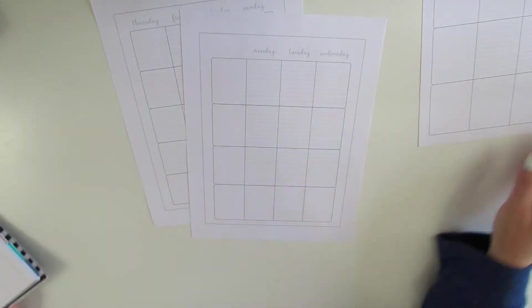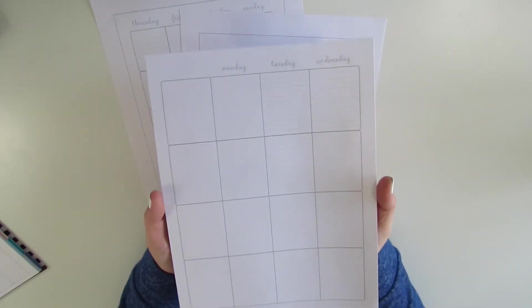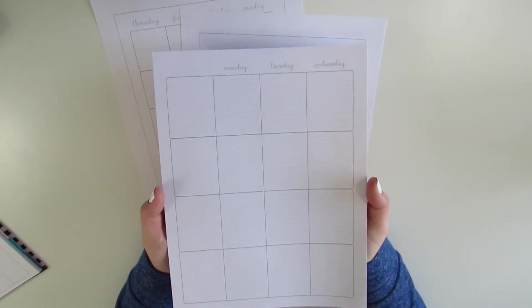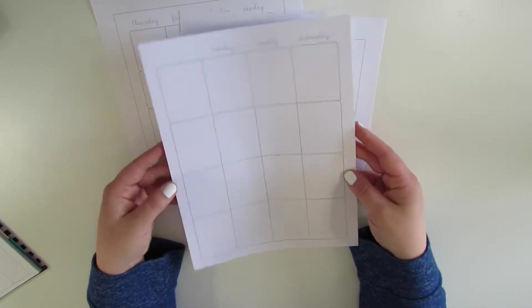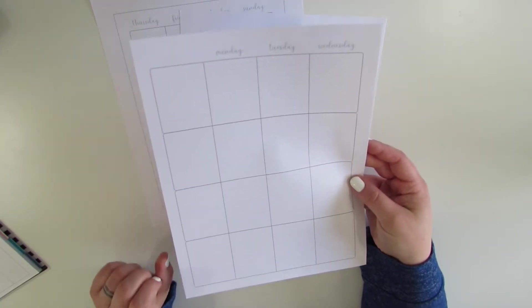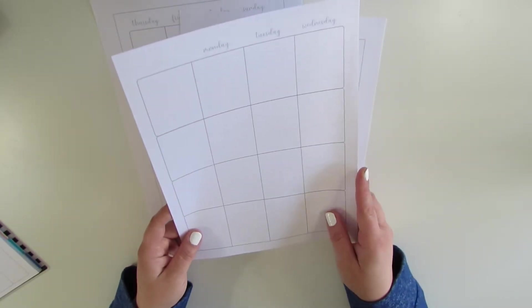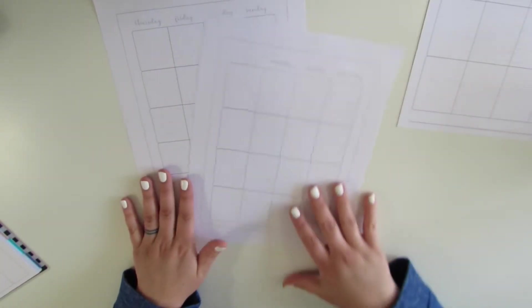And I have them sized for the Big Happy Planner, which is a full letter size 8.5x11. These would also work really well if you're just using a regular three-hole punched binder. You can just punch it like normal and stick it in any binder.